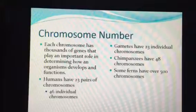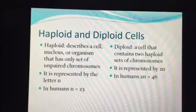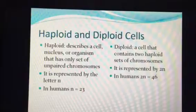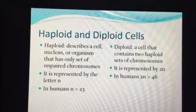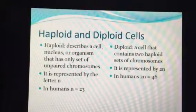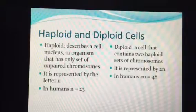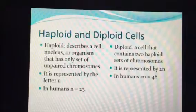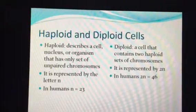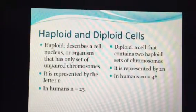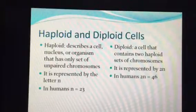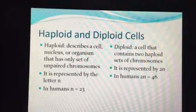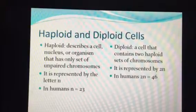In your gametes you have what we call a haploid cell. The haploid, or half the genetic information, is represented by the letter n. In humans, n equals 23, so a haploid gamete — sperm or egg — has 23 individual chromosomes. A diploid cell contains two haploid sets, so we call it 2n, and in humans 2n equals 46 chromosomes.